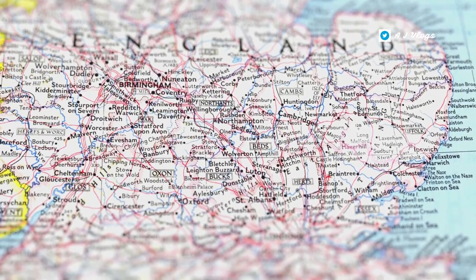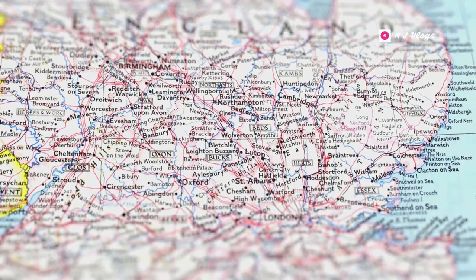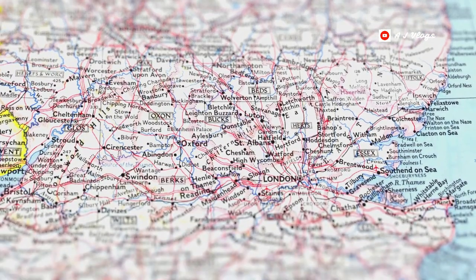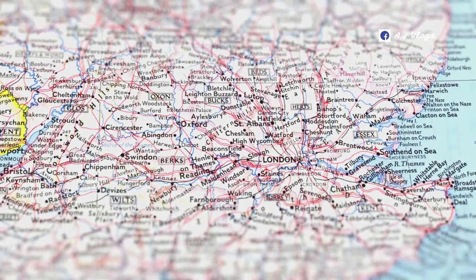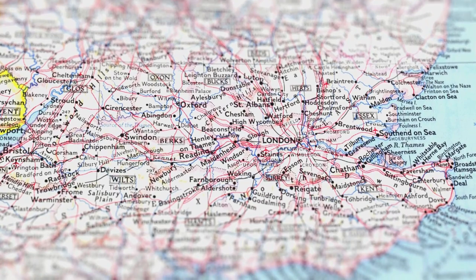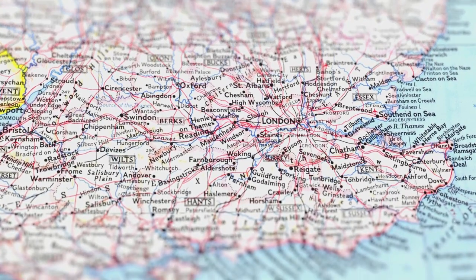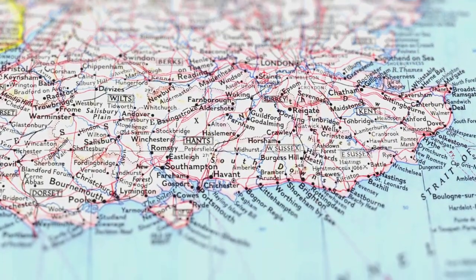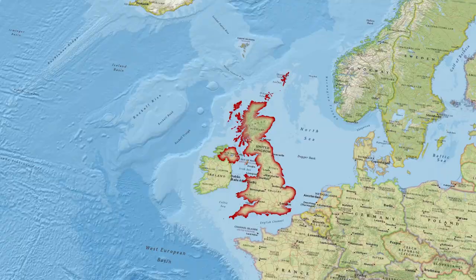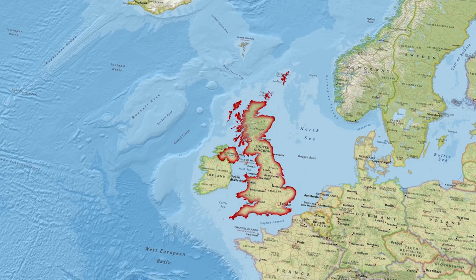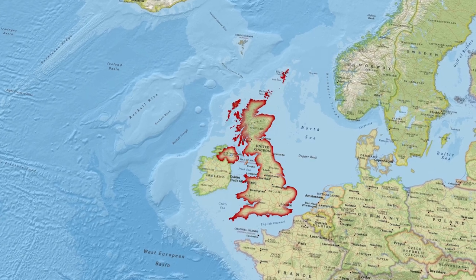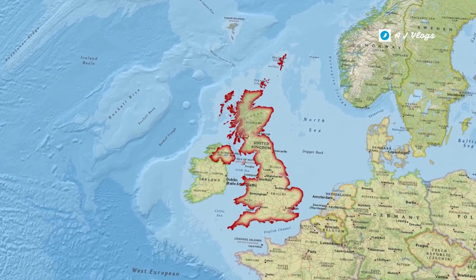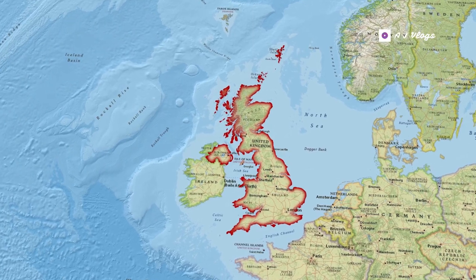The United Kingdom of Great Britain consists of England, Scotland, Wales, and a self-governing region, Northern Ireland. It is said that the name of Britain was given after the Briton tribes who migrated to this region from other countries in Europe.